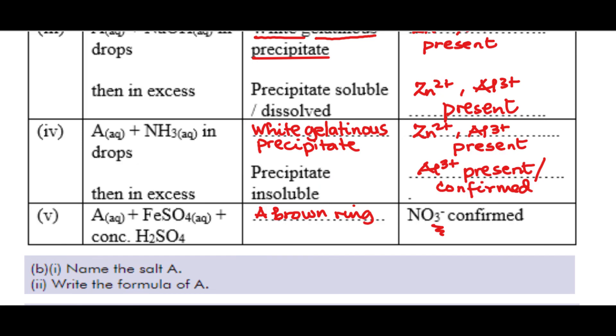We have question BI here, 2BI, which says name the salt A. Now, from the analysis we have carried out, we have seen that A, salt A contains aluminum ion and the trioxonitrate 5 ion. What would be the likely name of salt A?